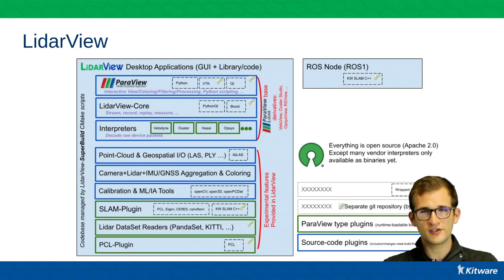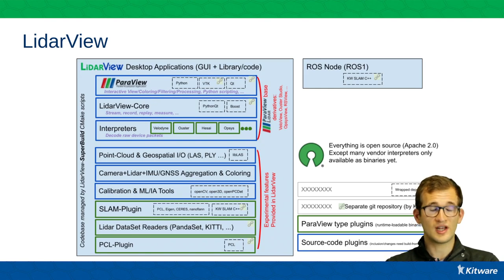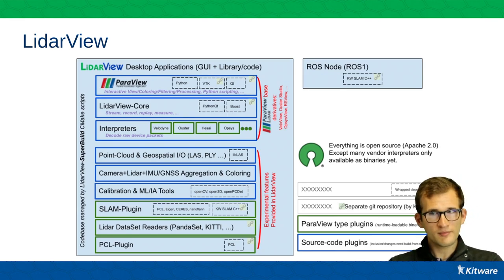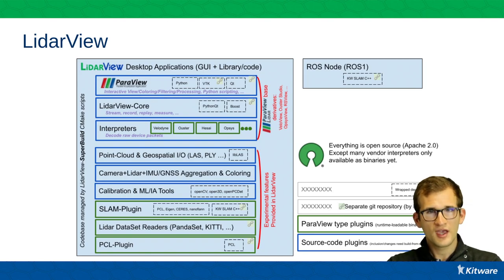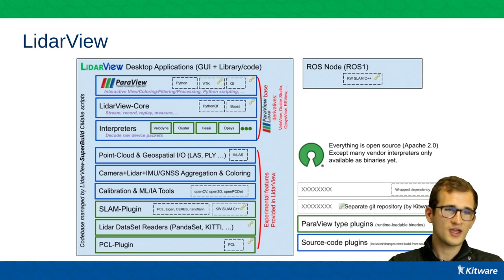There are also experimental features available in LidarView. Some are natively in the source code — shown in blue — such as camera calibration tools, camera-LiDAR calibration, and machine learning or deep learning tools. Others, like the SLAM I'm presenting today, are wrapped as a ParaView plugin. Kitware develops open-source software in separate repositories and wraps these algorithms as Lego blocks for different software environments — for example, you can use it in ROS for robot operating system users, or as a ParaView plugin within LidarView.